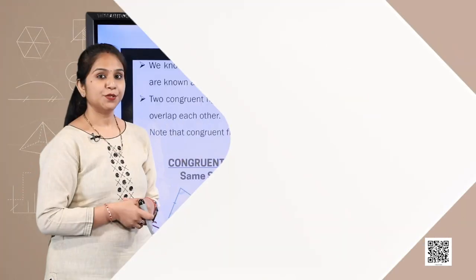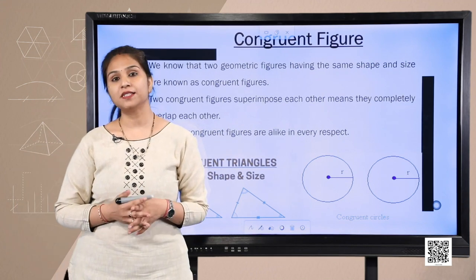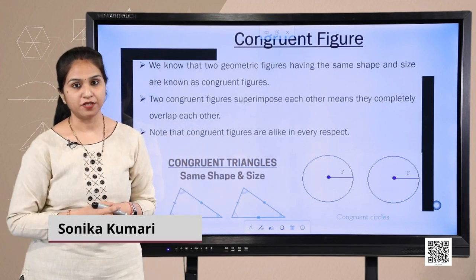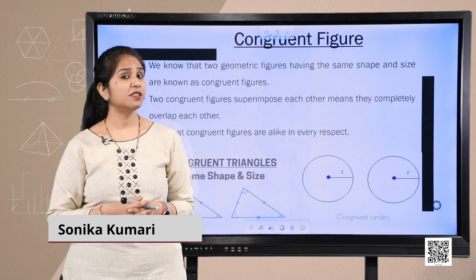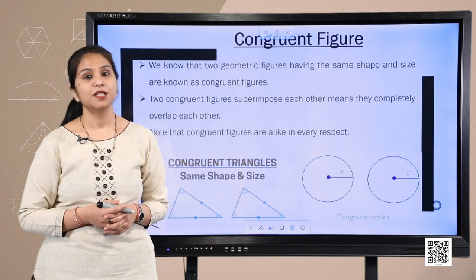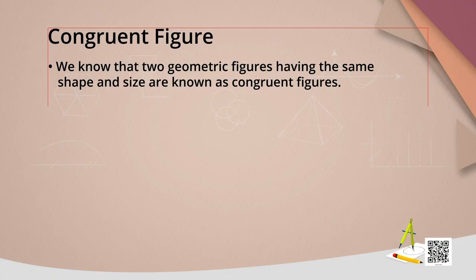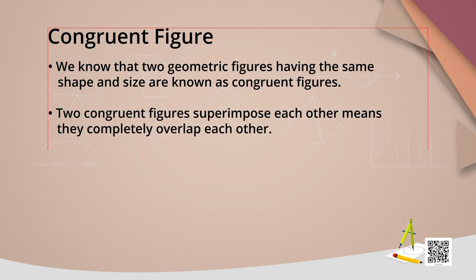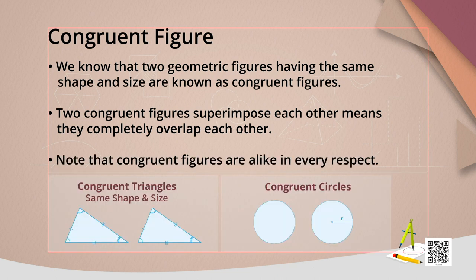Let's start by revising what we mean by congruent figures. You have learnt about congruent figures in classes 7, 8, and 9. Congruent figures or congruent polygons are figures that are equal in all aspects — they are superimposed images of each other, meaning all angles of one shape equal all angles of another shape, and all measurements are equal.